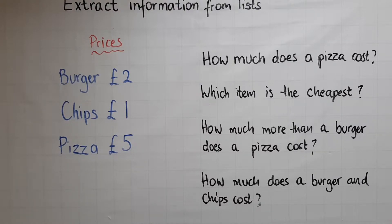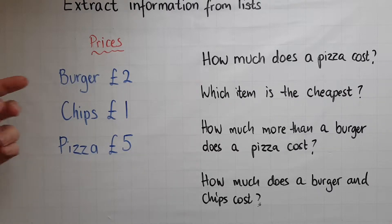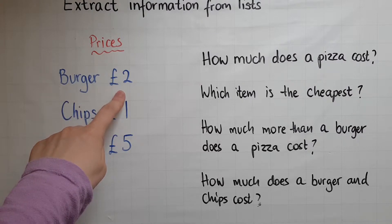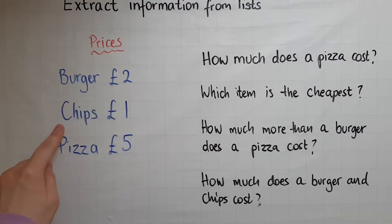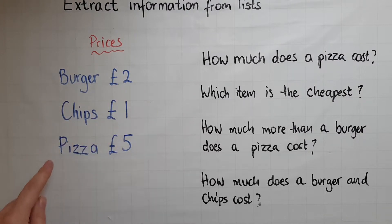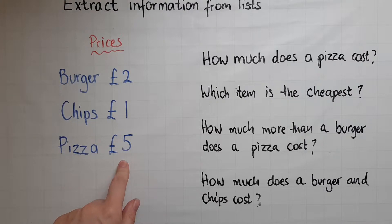In this example I've got prices from a takeaway shop. So we've got a burger costing two pounds, chips costing a pound, and pizza costing five pounds.